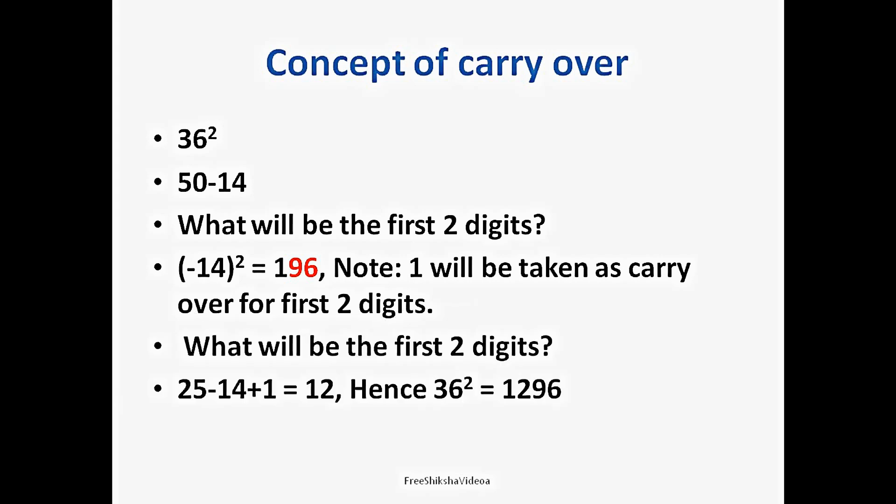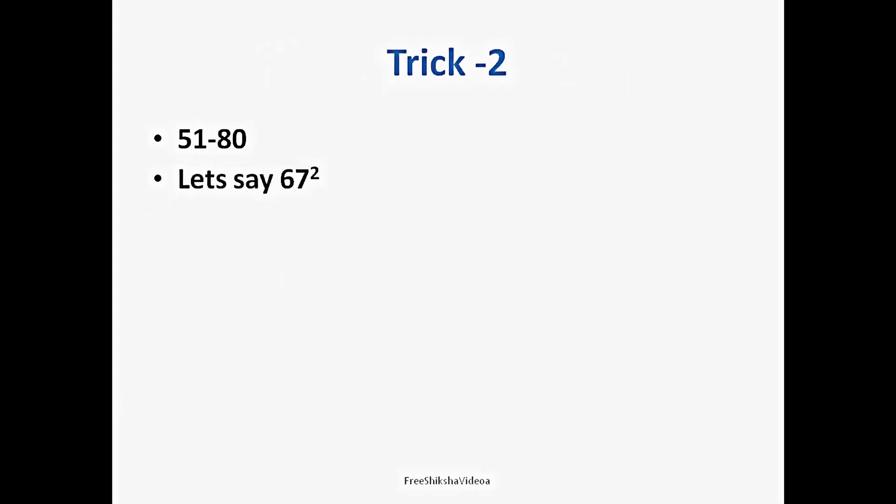What will be the first two digits? Well, 25 minus 14 plus 1. So 25 was a standard number as I said before, and we have to deduct 14, and we have to add 1 because 1 was the carry over from minus 14 square. So that comes out to be 12, and hence 36 square comes out to be 1296.